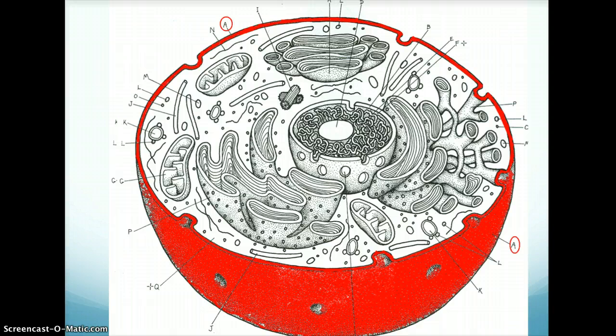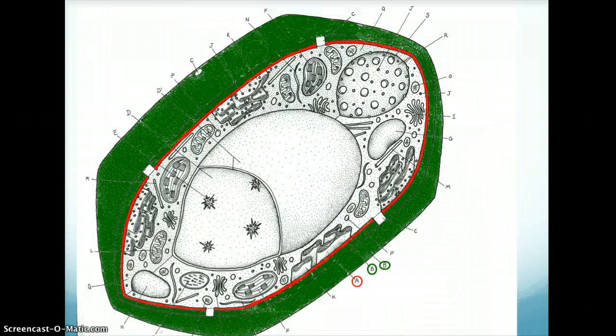The cell membrane is colored red in this animal cell. The cell membrane is colored red in this plant cell.